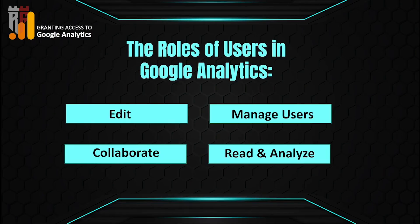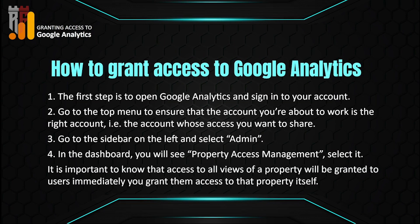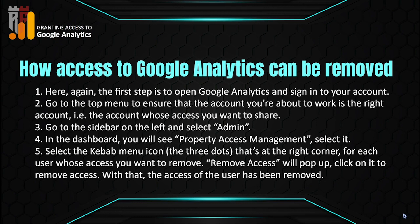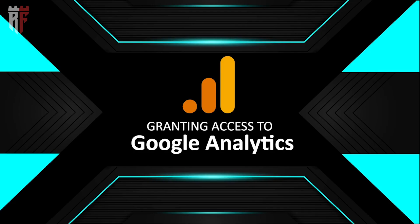To recap: go to Google Analytics, make sure you're in the right account, and click Admin on the left-hand side via the cogwheel. Then click Property Access Management, make sure you're in the right property, and hit the blue plus button at the top of the page. You'll get an option to add users — use the email address to add them. Do not give someone admin rights unless they absolutely must have it, because that can be a very bad situation.